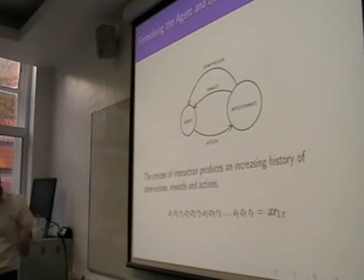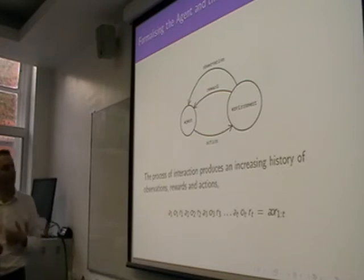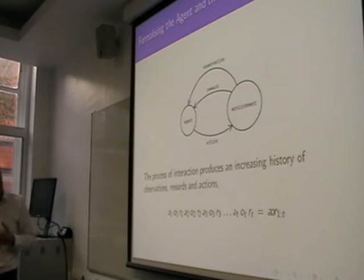Now, this produces some interaction history over time. The agent performs an action. The environment returns an observation reward. The cycle continues. And so, I formalize this as follows. So, the A's are the actions. O's are the observations. R are the rewards. Goes along over time, up to, say, time T.